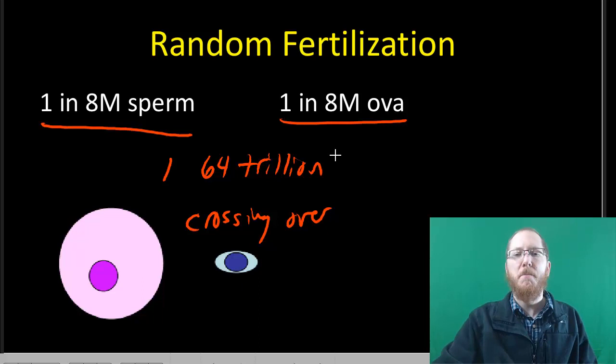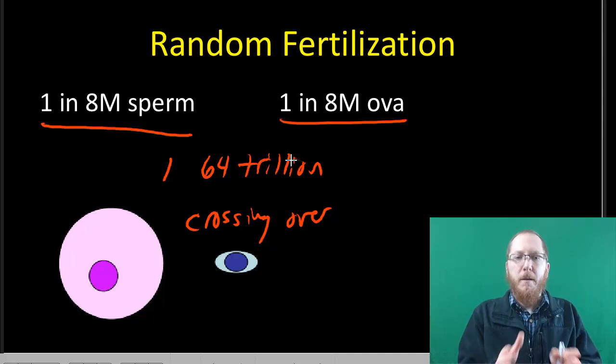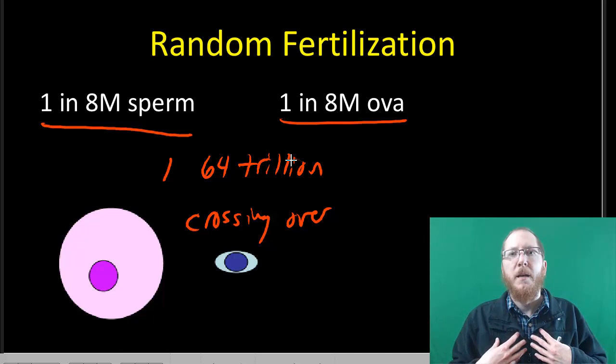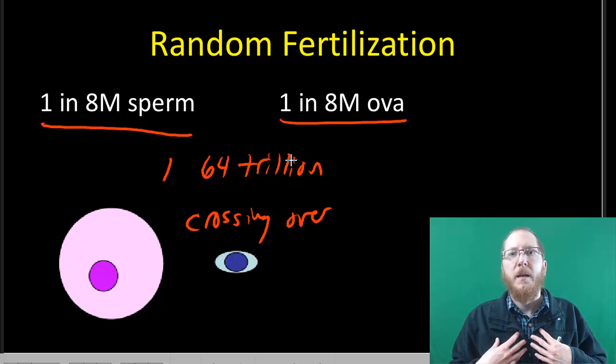So when you add that in, it's pretty much impossible to get identical twins through any means other than having it be the same egg and the same sperm. And that's where you get actual identical twins, is where it's the same egg and the same sperm that as it's developing accidentally breaks apart and each part develops into a person. So that's why they have the same genetics. The odds of you having a brother or sister, regardless of when they're born, that's identical to you is pretty much non-existent.